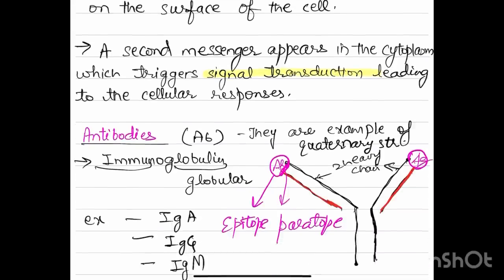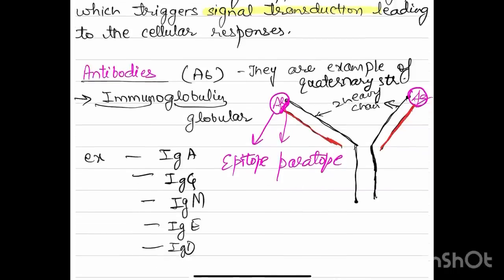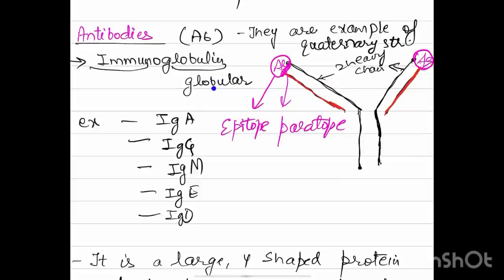Antibodies are also protein in nature. They are examples of quaternary structure, just like immunoglobulin. You can see here this is a quaternary structure with two heavy chains and two light chains. This is a paratope and an epitope which represent the sites of antigen-antibody binding. The examples of antibodies, also called immunoglobulins because they are globular in shape: IgA, IgG, IgM, IgE, and IgD.